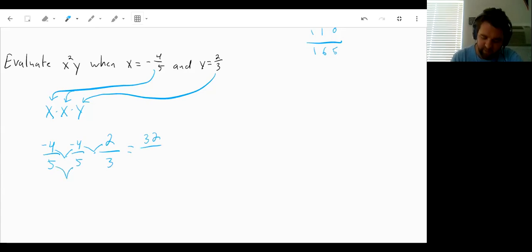So negative 4 times negative 4 is a positive 16 times 2 is a positive 32. 5 times 5 is 25 times 3 is 75. So our answer in this case comes up to 32 75ths.